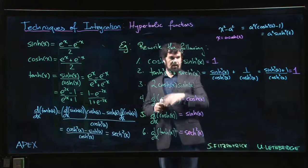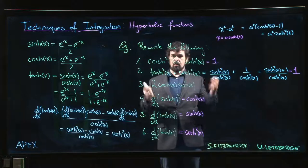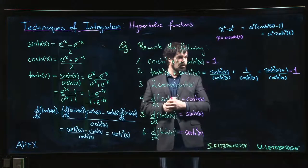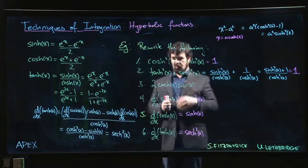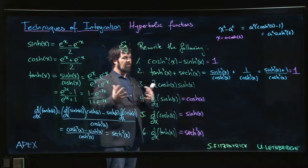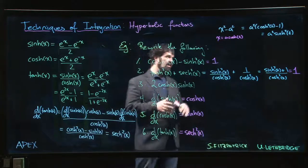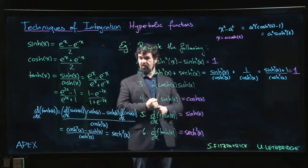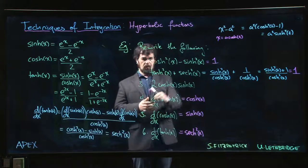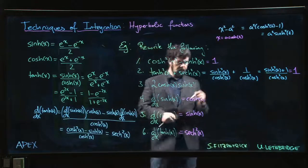Similar ones with this identity - tanh squared plus sech squared is one - we can come up with applications for that in simplifying integrals. So we get identities that kind of remind us of these Pythagorean identities that we had for the trig functions, and we can put them to similar uses depending on the scenario.